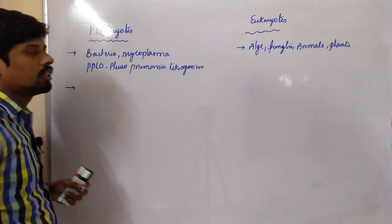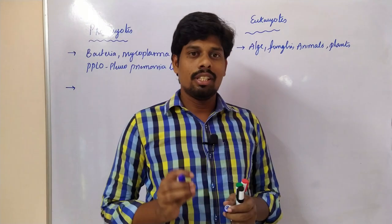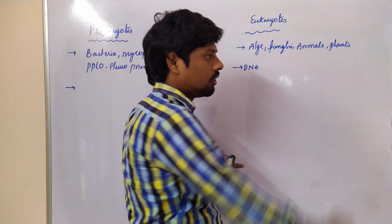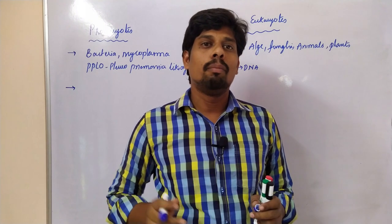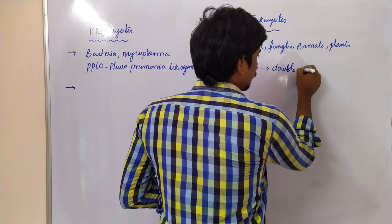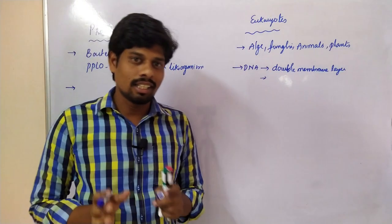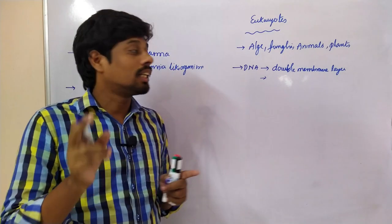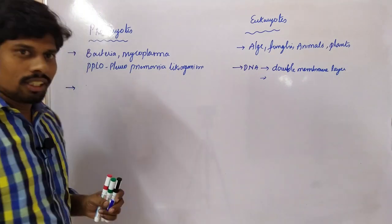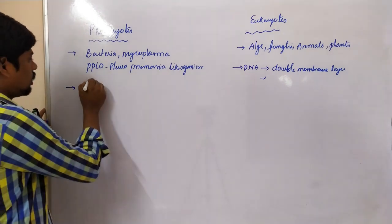Let us look at the definition of prokaryotes and eukaryotes. DNA is the genetic material, and in eukaryotes the DNA is present in the nucleus. That nucleus contains a double membrane layer, so the DNA is enclosed in a double membrane layer. Organisms whose DNA material is contained within a nucleus that has a double membrane layer are called eukaryotes.